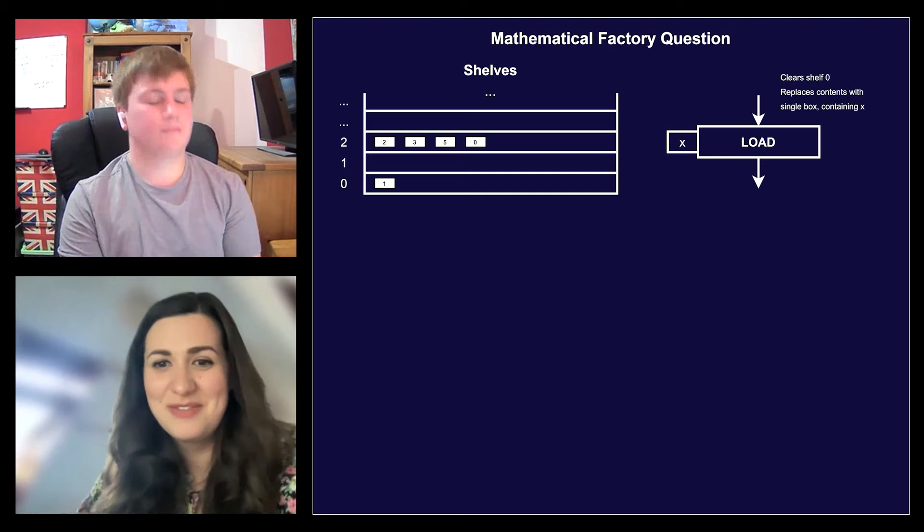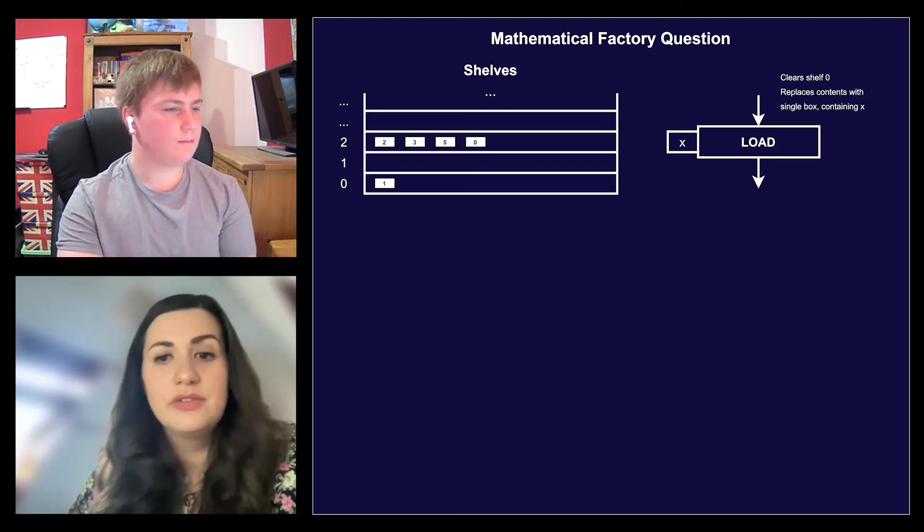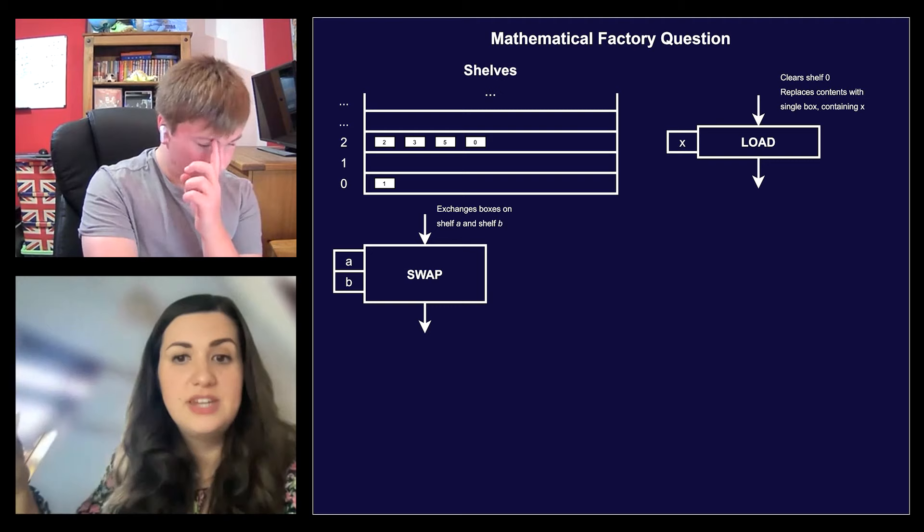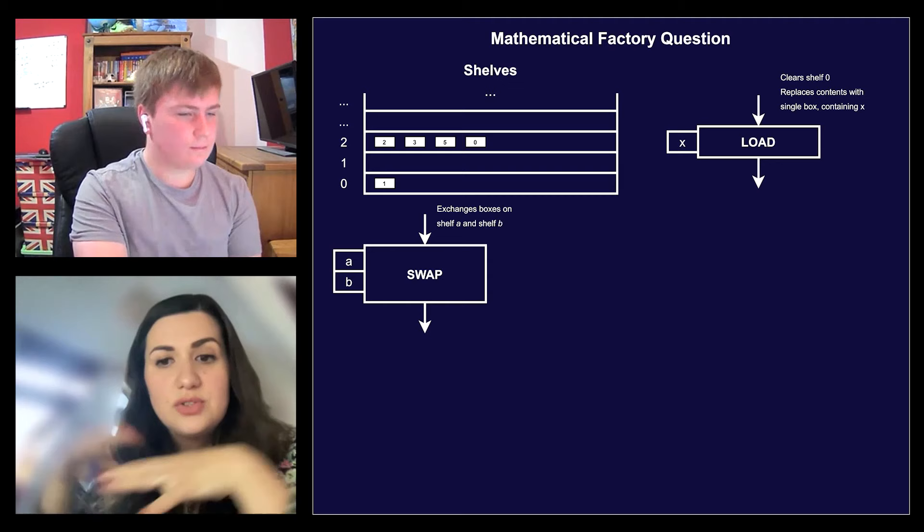In your flowcharts, you're allowed to combine together six different types of blocks. The first is the load instruction — it places a box containing integer x on shelf zero. The second instruction is swap. The swap instruction takes two shelves, say shelf A and shelf B, and simply swaps around the boxes on the two shelves. So all of the boxes that were on shelf A are now on shelf B and vice versa.